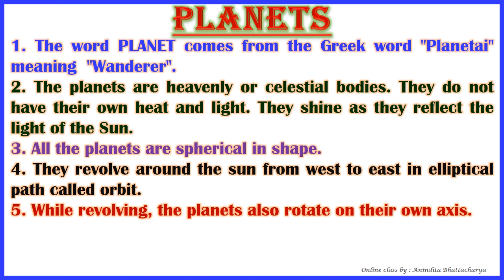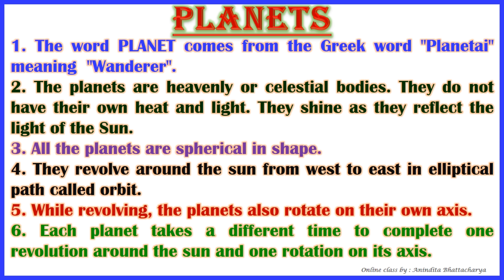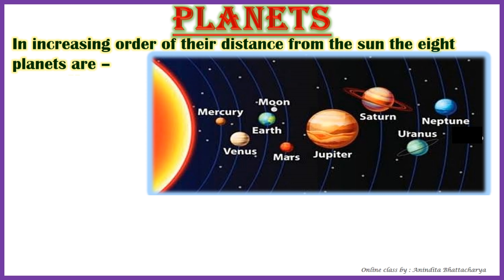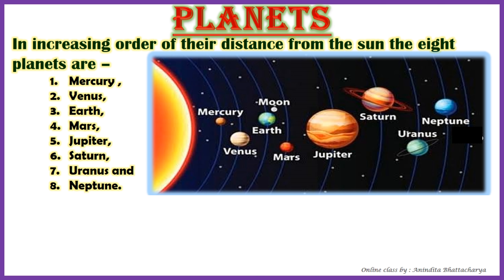While revolving around the Sun, the planets also rotate on their own axis. The time a planet takes to go around the Sun is called its revolution, and the spinning of a planet on its own axis is called rotation. Each planet takes a different time to complete one revolution around the Sun and one rotation on its own axis.